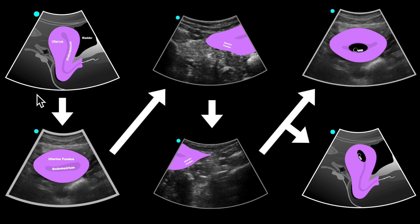We recommend starting in a uterus long axis view using the curvilinear probe with the probe marker faced towards the patient's head, starting midline and scanning from the patient's right to left. We then rotate to the patient's right and scan from the fundus to the cervix in a short axis view. Then we look at the right adnexa, left adnexa, and then focus on any pregnancy-related contents, abnormal adnexal masses, or free fluid.